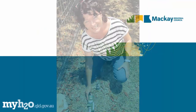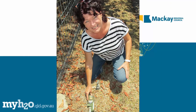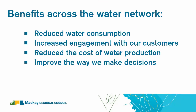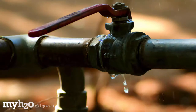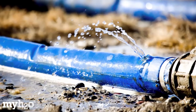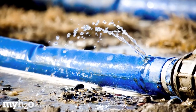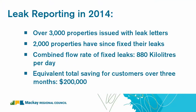Using the MyH2O system, Mackay Regional Council can empower its water customers to better manage their own water consumption. Mackay Regional Council is able to provide a better level of service to water customers by providing timely alerting for water leaks and high consumption. Mackay will be the first water utility across Australia to provide its customers with a fully automated leak alerting solution. Using this technology, Mackay Regional Council has already been able to manually issue notifications to upwards of 3,000 properties since 2012, with almost 2,000 of these leaks being fixed.